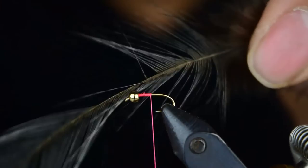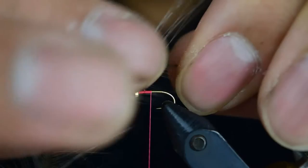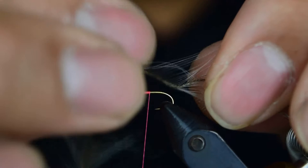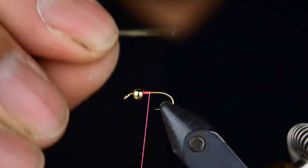Then we're going to go ahead and get our Coq de Leon fibers. What we're going to do is stroke the fibers to get them parallel, get them even like so, and we're just going to grab a hold of them and pull them off. That should make them all even. Go ahead and grab them by their tips and we're going to measure it to be about the length of the shank of the hook here.